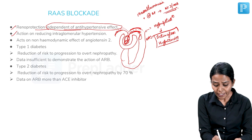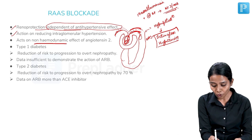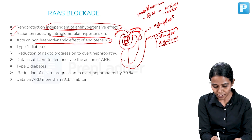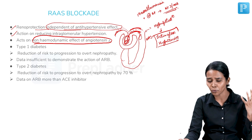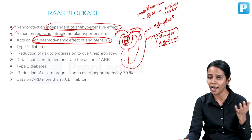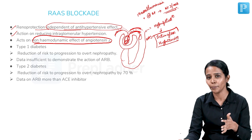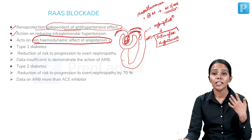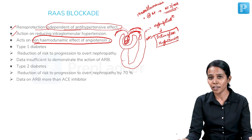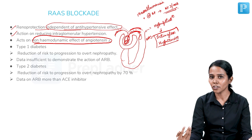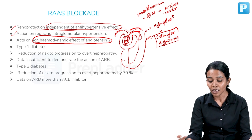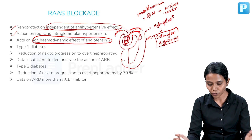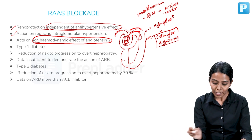ACE inhibitor also acts on the non-hemodynamic effect of angiotensin 2. Angiotensin 2 has both hemodynamic and non-hemodynamic effects. The non-hemodynamic effect is to worsen inflammation in the kidney, and that is also prevented by ACE inhibitor.